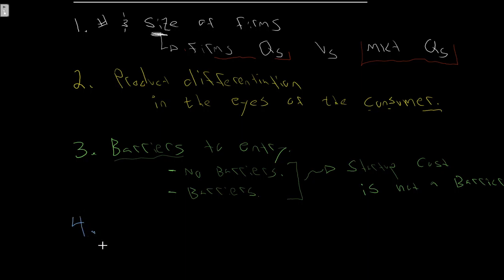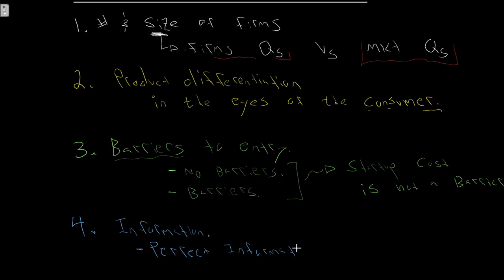Our final determinant is information. We're going to have either perfect information — which is what we'll assume for the majority of this course — or asymmetric information. Perfect information means all consumers and all producers have perfect information. As a consumer, I know exactly the quality, exactly the price, and all information I need about the apple I'm buying. I know the price every other producer is charging, and I can make my decision accordingly.